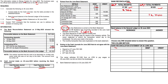The direct deposit by G Glenn was for monthly rent. That R14,600 is an inflow - money coming in - so it's going to be a receipt. We can plug in our R14,600 into the CRJ.